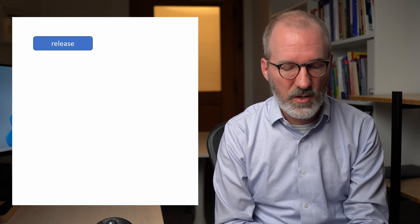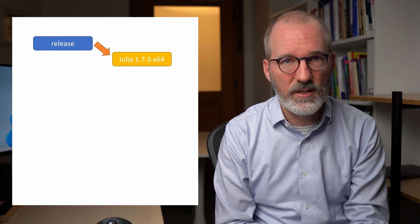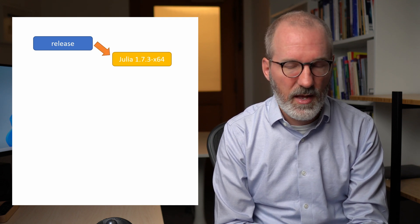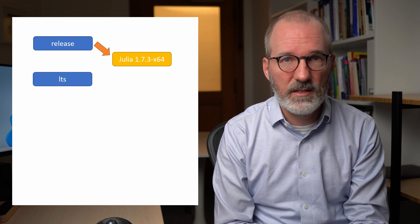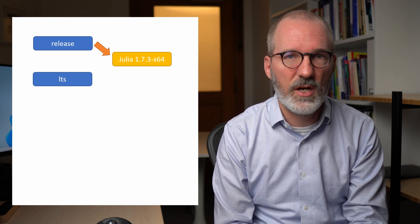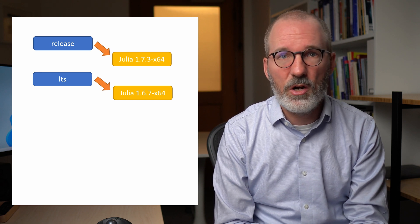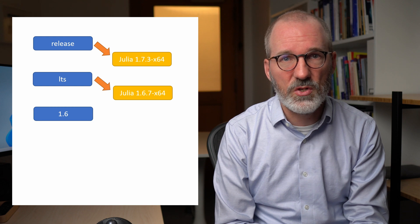The core idea in JuliaUp are channels. So channels is what a user installs and runs. And here are a couple of examples of channels that JuliaUp supports. So for example, there's a release channel. The release channel always points to the latest stable version of Julia. There is an LTS channel, the long-term support channel. So that channel always points to the latest long-term support release.